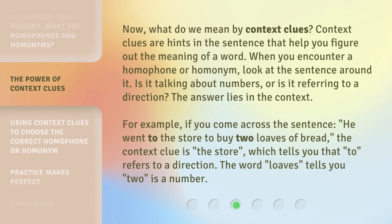Now, what do we mean by context clues? Context clues are hints in the sentence that help you figure out the meaning of a word. When you encounter a homophone or homonym, look at the sentence around it. Is it talking about numbers, or is it referring to a direction? The answer lies in the context. For example, in the sentence 'He went to the store to buy two loaves of bread,' the word 'loaves' tells you that 'two' is a number.